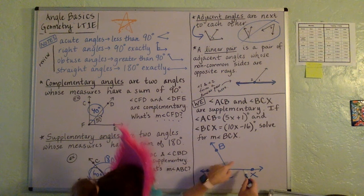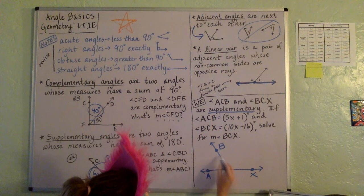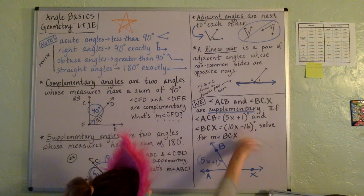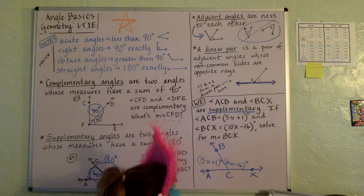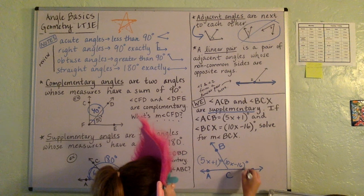So we know this angle and this angle are supplementary. That means these add to 180. We know that ACB is represented by 5X plus 1 degrees, and BCX is 10X minus 16 degrees. And then we want to solve for the measure of angle BCX. And so I think we can just set up a little equation right here on this one.